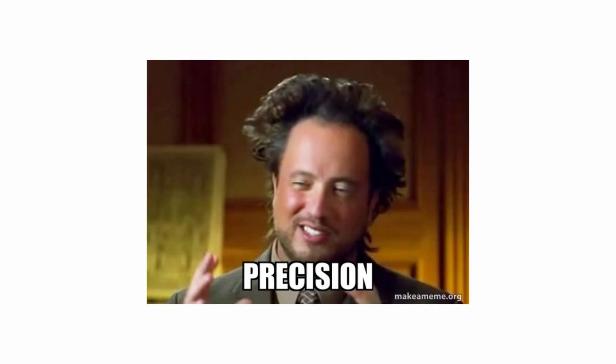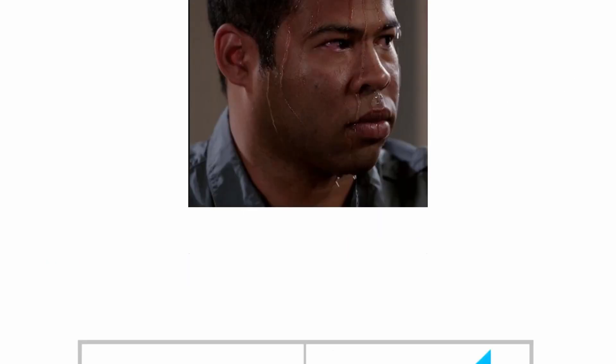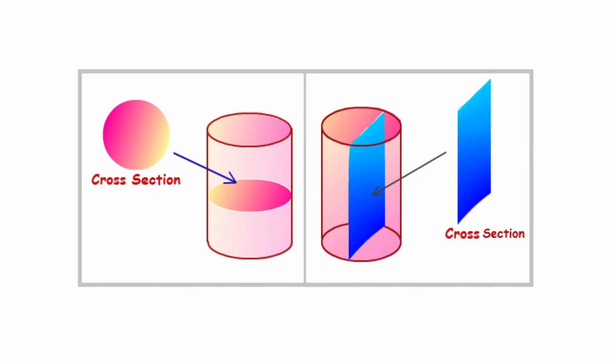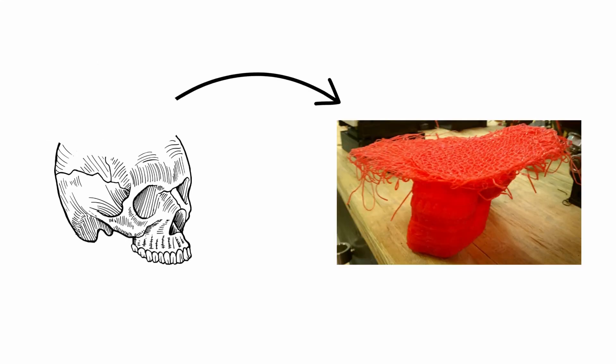The precision of these shapes is critical, as each cross-section of the model is a plain figure. Without precise 2D geometry, the 3D construction falls apart, literally and mathematically.